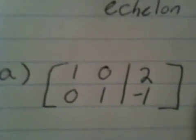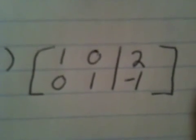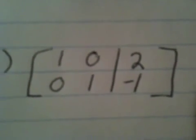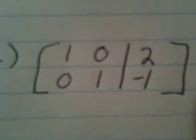Our second criteria requires that above, below, and to the left of the first non-zero 1, there are zeros. Our first leading 1 has nothing above it, nothing to the left of it, and a 0 below it. Our second leading 1 on the bottom row has a 0 above it, a 0 to the left of it, and nothing below it. So this matrix is in reduced row-echelon form.